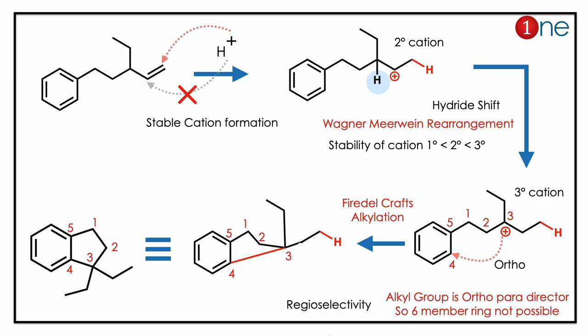The cation can then attack the benzene ring via electrophilic aromatic substitution, but the ring size is dictated by regioselectivity. Because the alkyl group is an ortho/para director, ortho substitution leads to a fused six-membered and five-membered ring product.